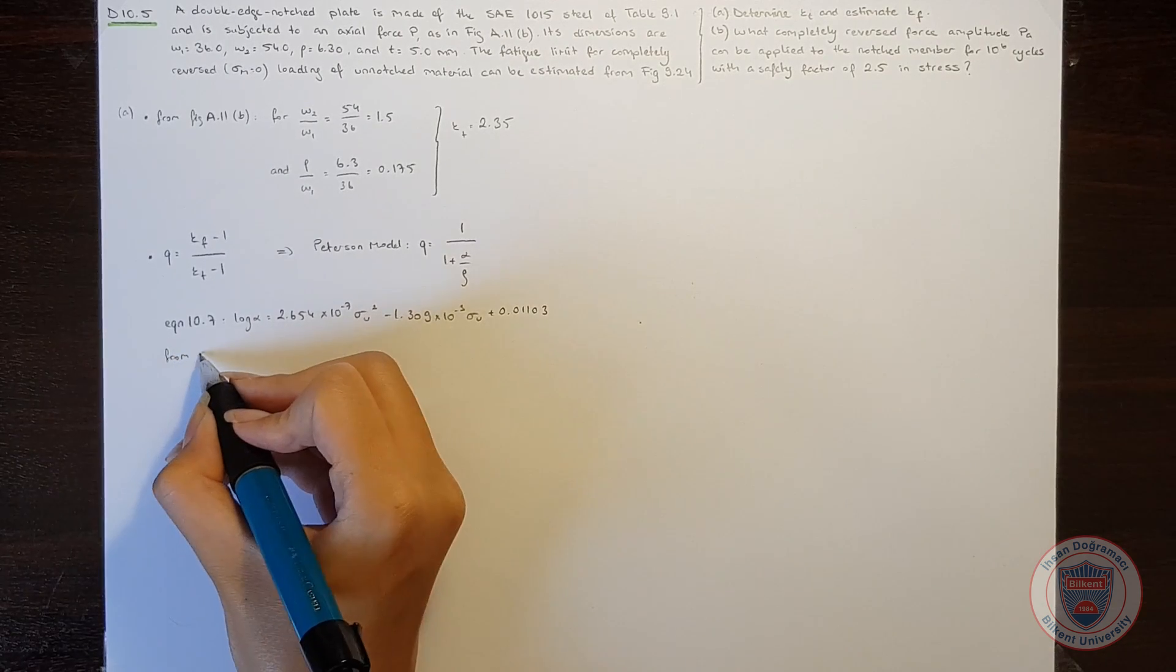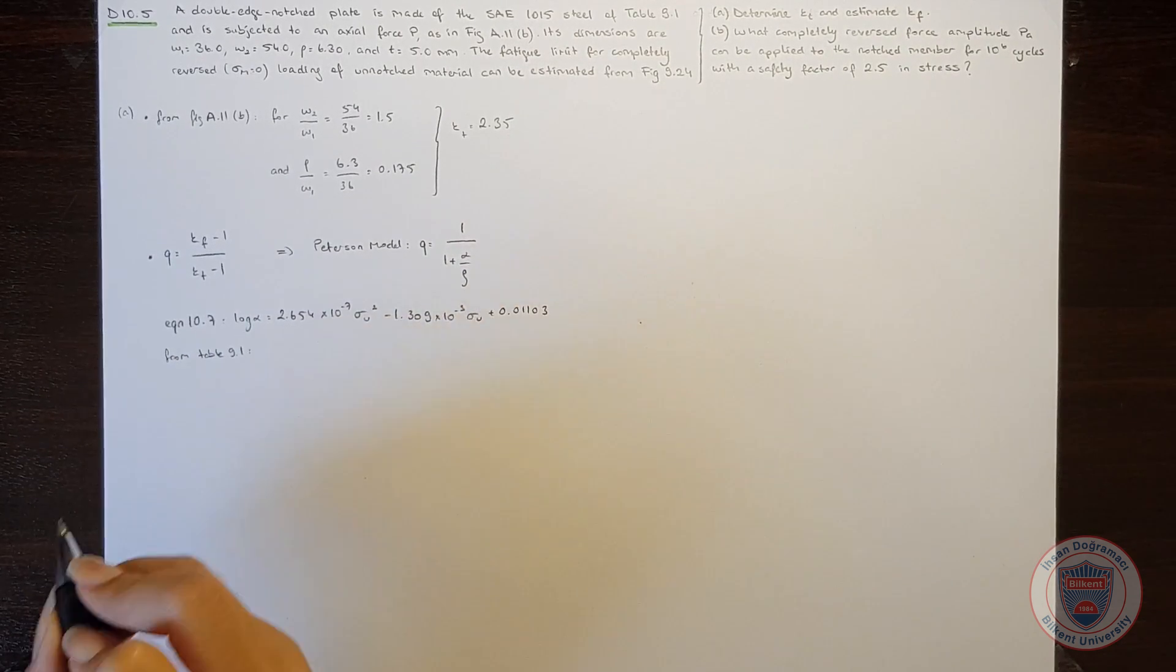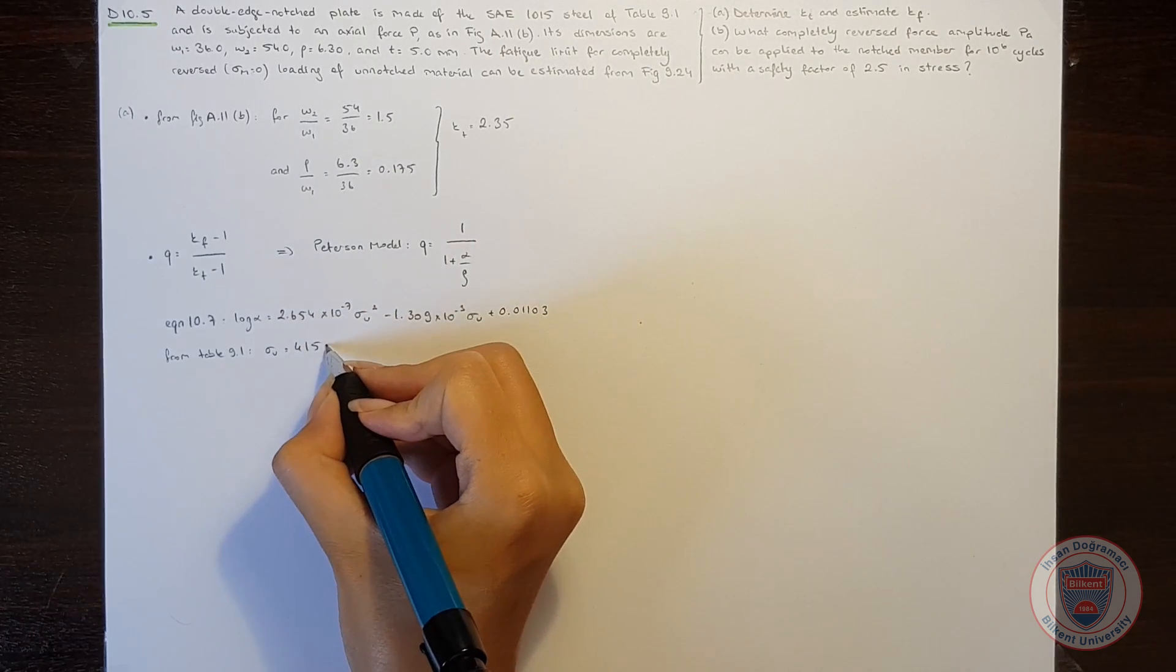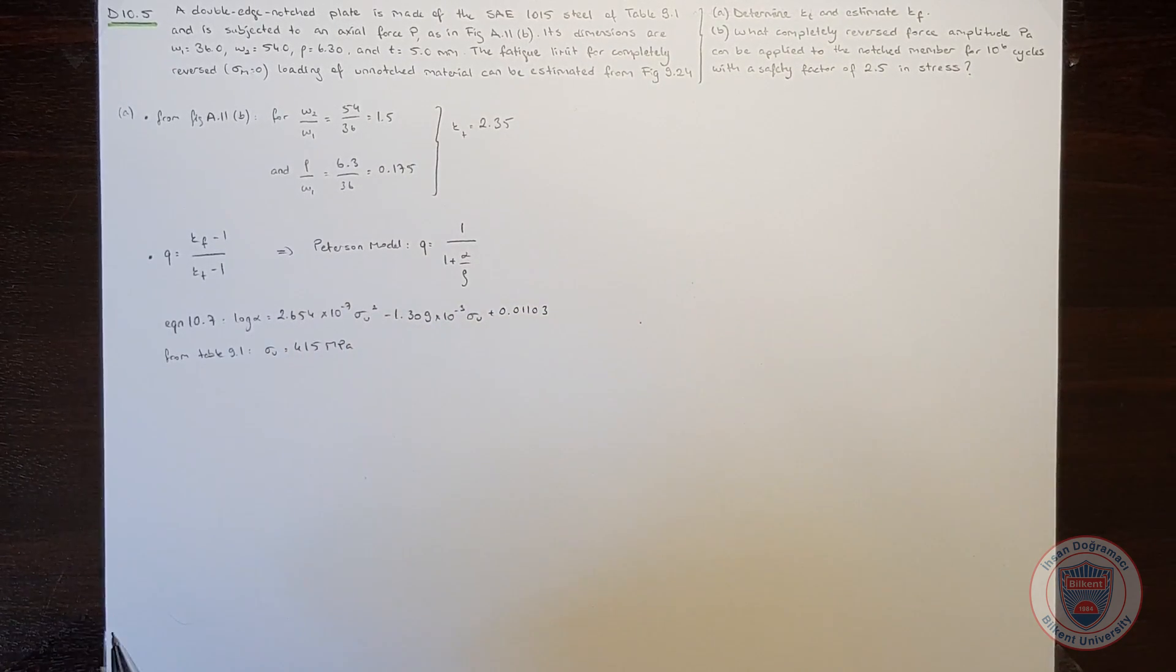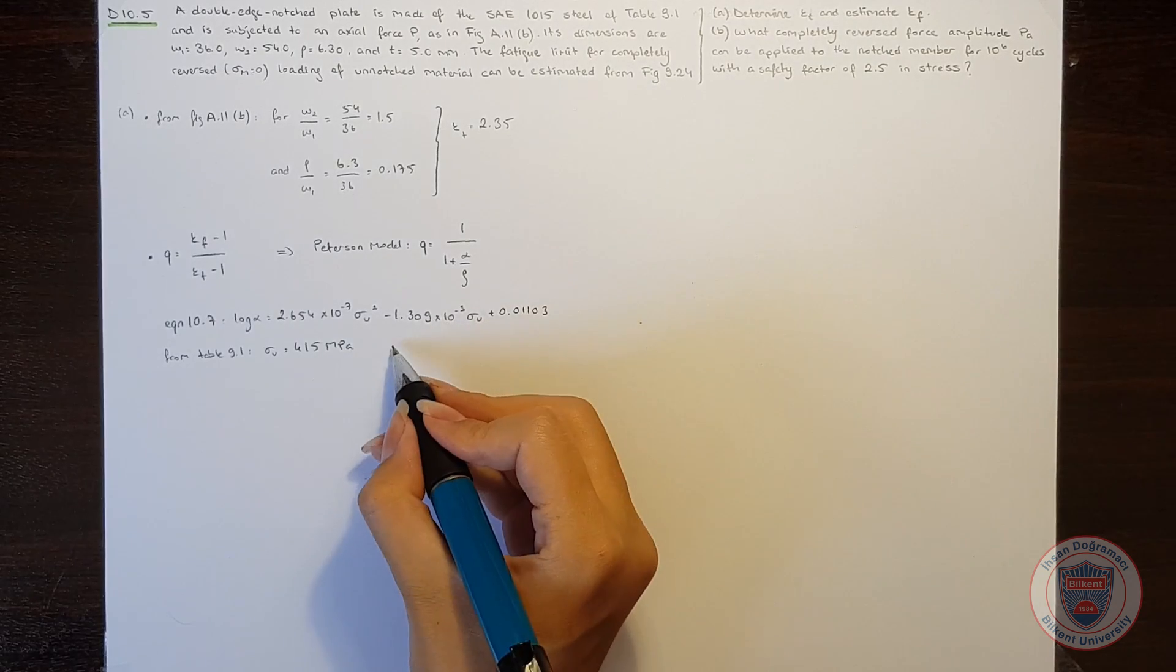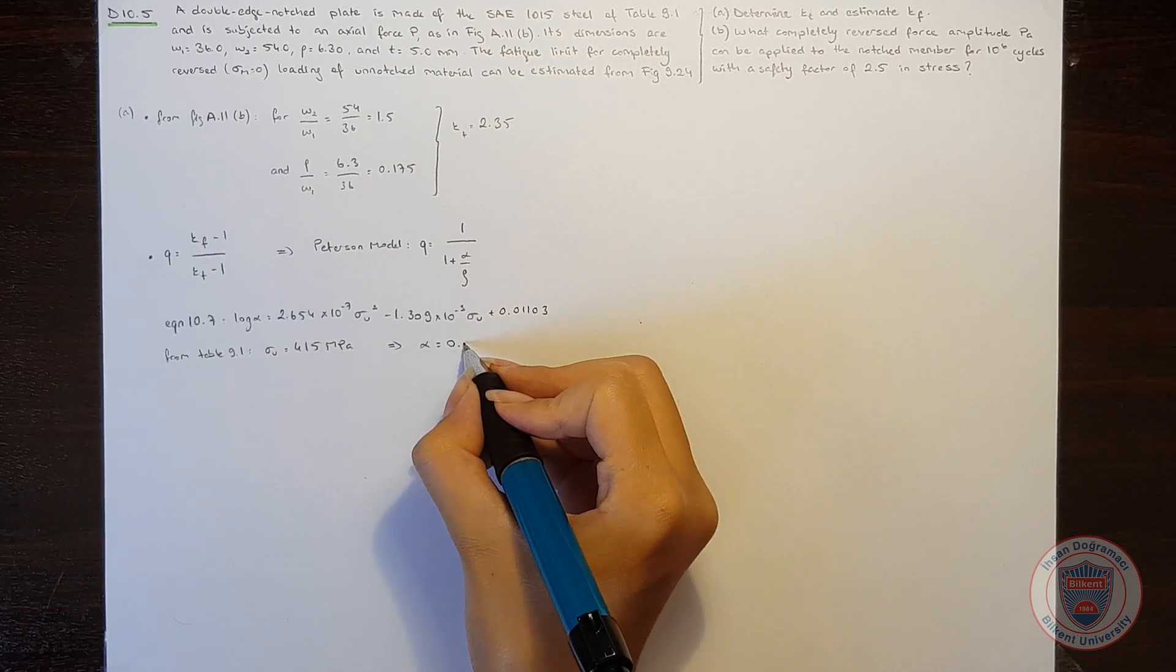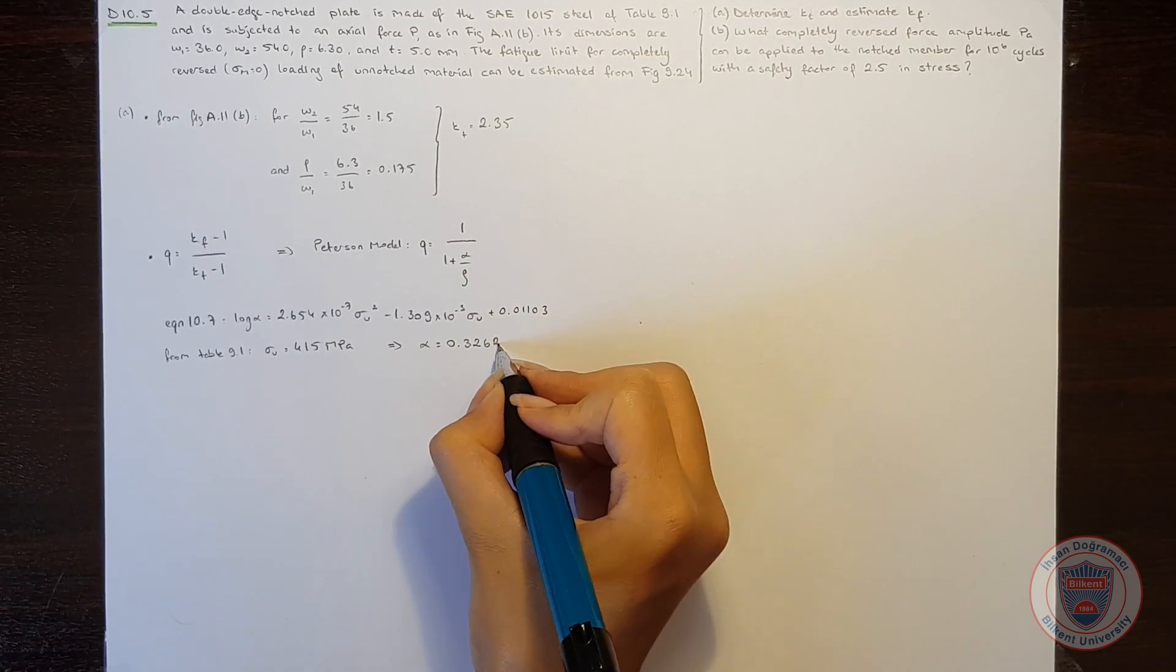And we know that from table 9.1, the ultimate strength is equal to 415 MPa. And when we compute this equation with sigma u being 415 MPa, we will obtain alpha is equal to 0.3262 millimeters.